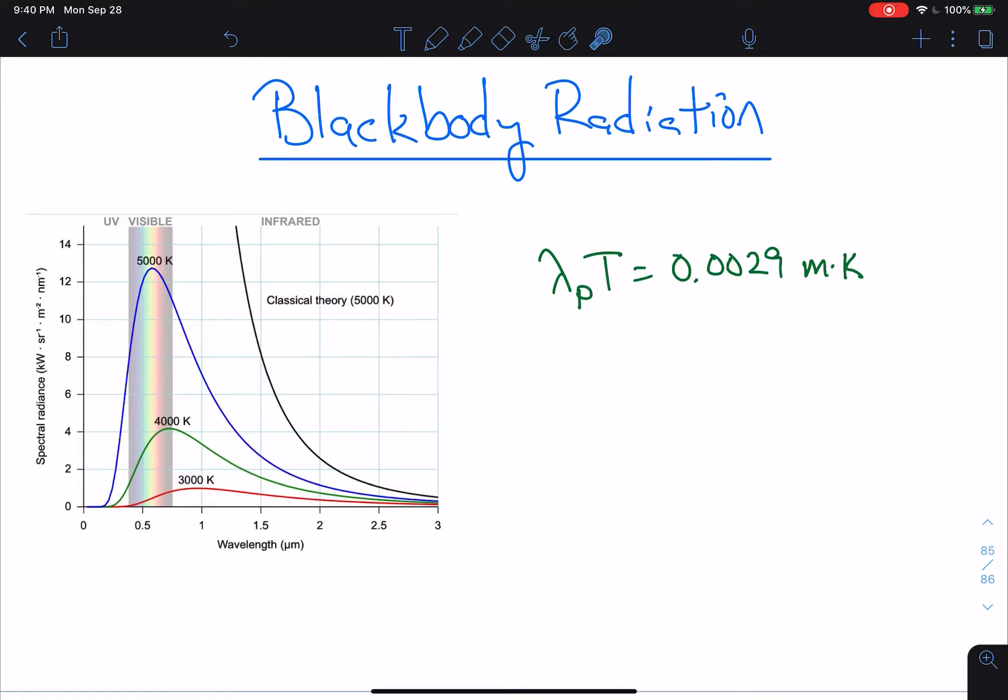So this graph essentially is showing the intensity of the light, or I should say the intensity of a given wavelength, because over here on the x-axis, we got the wavelength. And you can see that there's a peak. It goes up, and this is the peak.